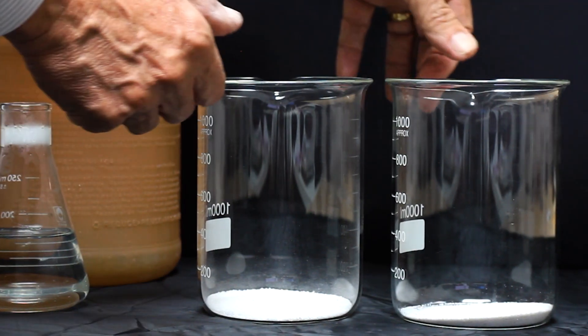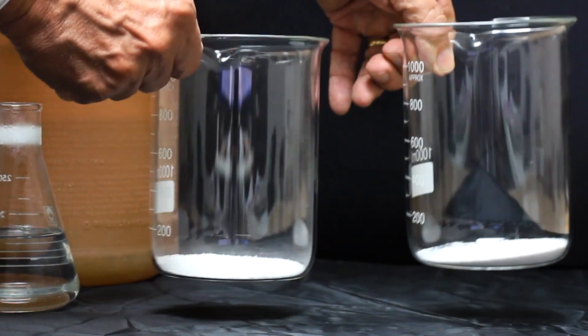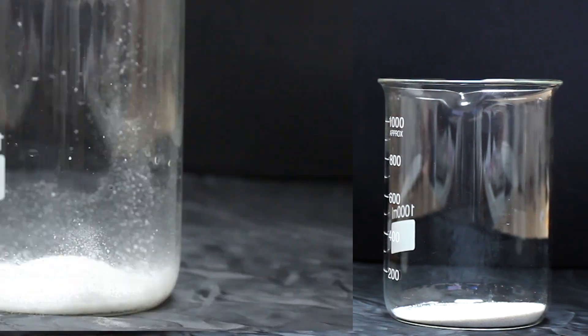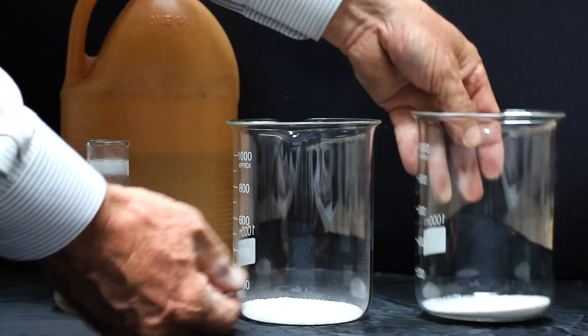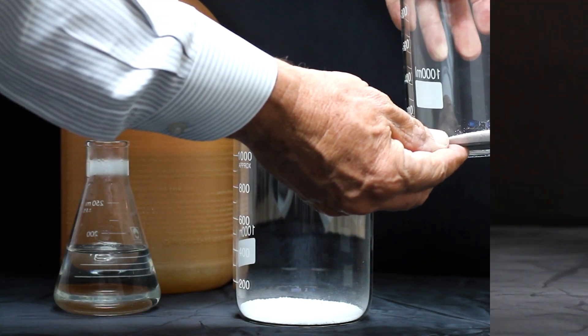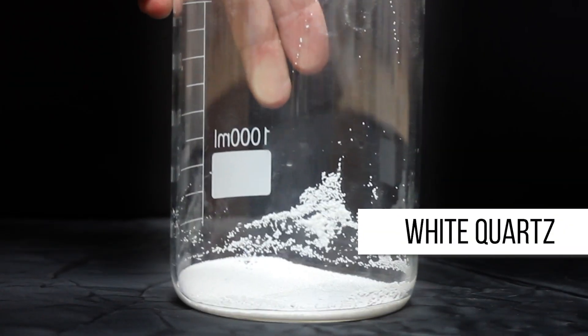As you can see, we have two different beakers here with two different white substances. This one contains pool plaster marble, the aggregate that's put in regular plaster, and in this one we have white quartz which would be replacing the marble in a quartz job.